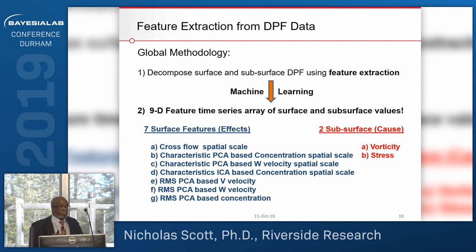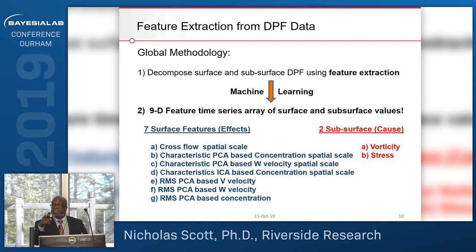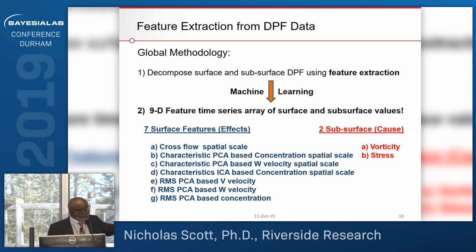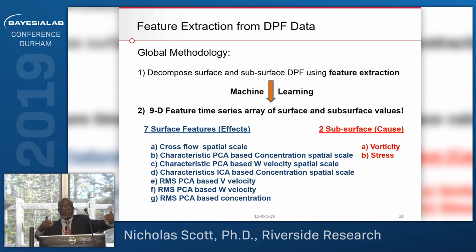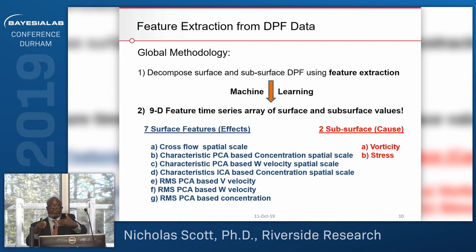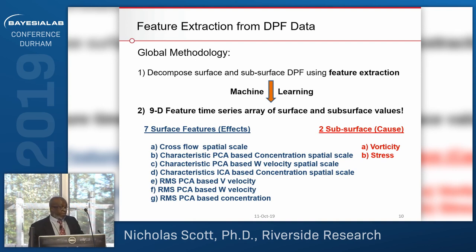The causes are vorticity and stress. Crowds feel vorticity and stress too — if you fire a gun, everybody runs through the doors; that's stress. How the particles move, those are the features. For a crowd turbulent situation, as people go through a door, there'll be lateral movement — a cross-flow scale, so to speak. Causes are impulses and stresses; effects or observations are how you react.